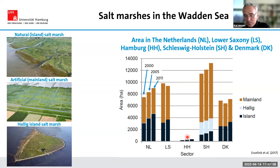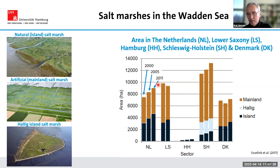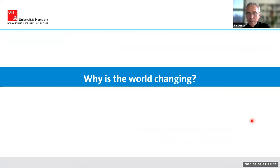Looking at recent development across the Netherlands, Germany, and Denmark, we can see an increase in salt marsh area during the last 20 years — roughly between 2000 and 2018 — particularly for mainland and island salt marshes.